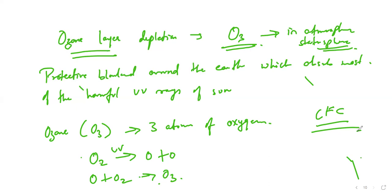Mostly CFCs are found in refrigerators and even in fire extinguishers. When the CFC molecules reach the ozone, it starts depleting that particular layer and there will be minute holes through which UV rays can easily pass and reach the earth's surface. This is how ozone layer depletion takes place.